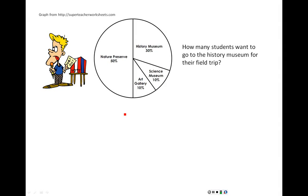Here we have an example of a pie chart. We're going to talk just a little bit about some interpretation issues that we have when we're looking at pie charts. In this particular pie chart, I've got an example of a class that was being surveyed to find out where they wanted to go on a field trip.